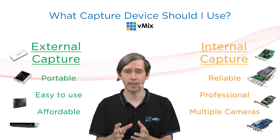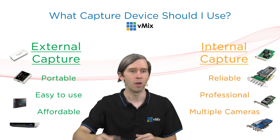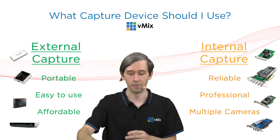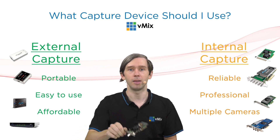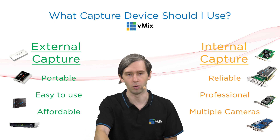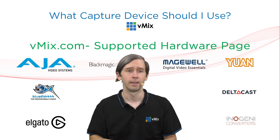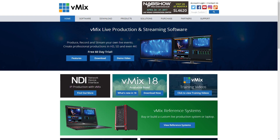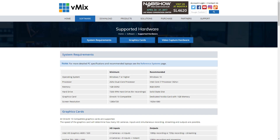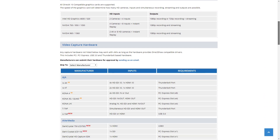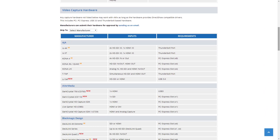To recap: external capture is really good — portable, easy to use, just plug and play. Internal capture is more professional, reliable, and allows you to have more inputs for your production. We support a whole bunch of different brands — they're all on our website at vmix.com on the supported hardware page. You can also go to our forums and ask if anyone has experience with particular brands or using them in a certain type of production.